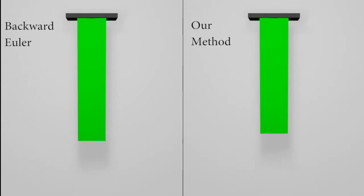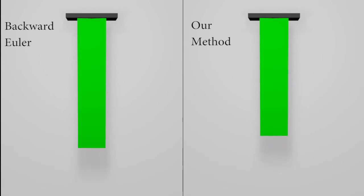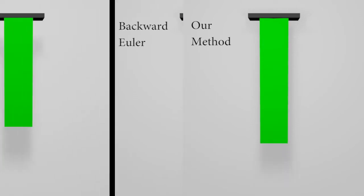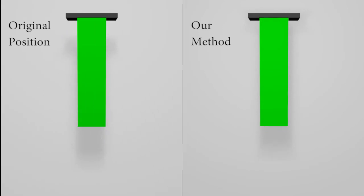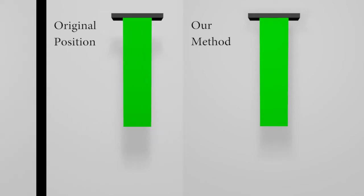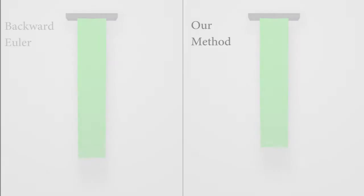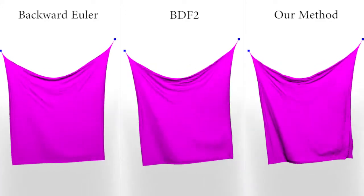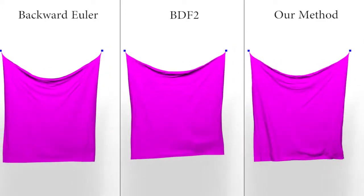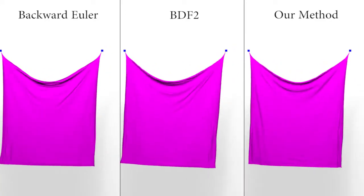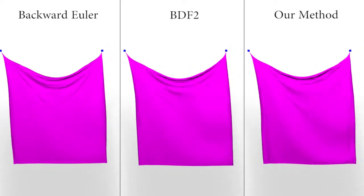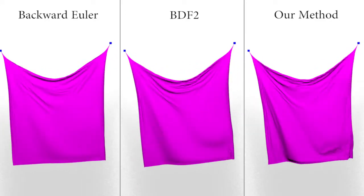Compared to backward Euler, we have much less dissipation. With our method, the bar is able to return to its starting position, even after several bounces. Our method also produces nicer wrinkles and cloth than backward Euler and its second-order version, BDF2.